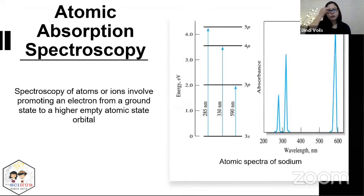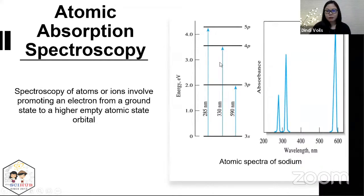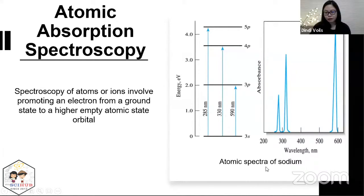In AAS, what's involved is the energy transition of electrons in atoms or ions. These bands are specific to your elements. For example, the atomic spectra of sodium show the wavelengths that correspond to electronic transitions.